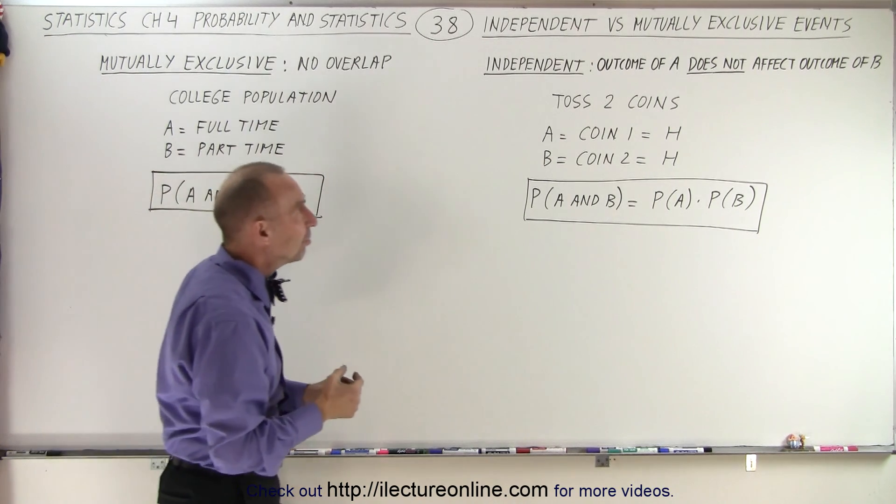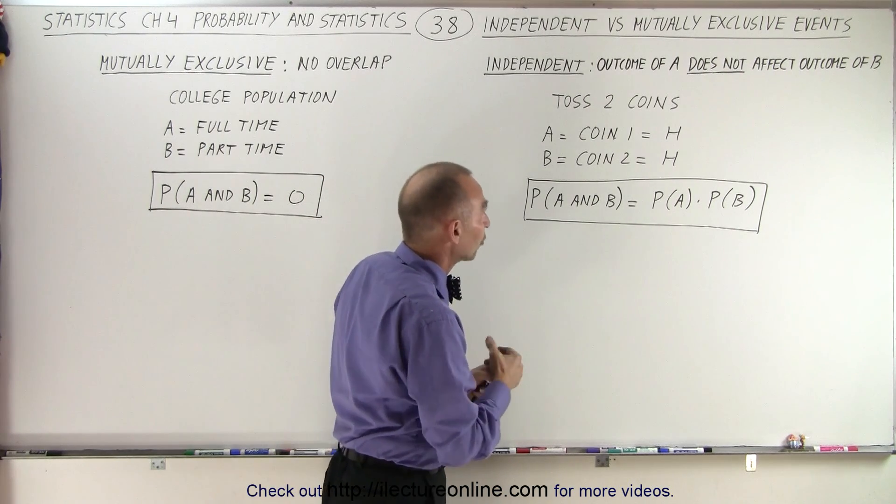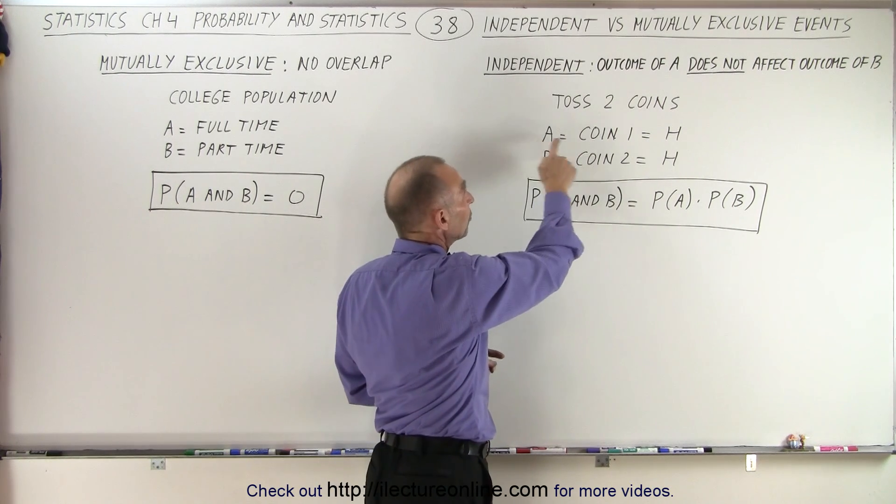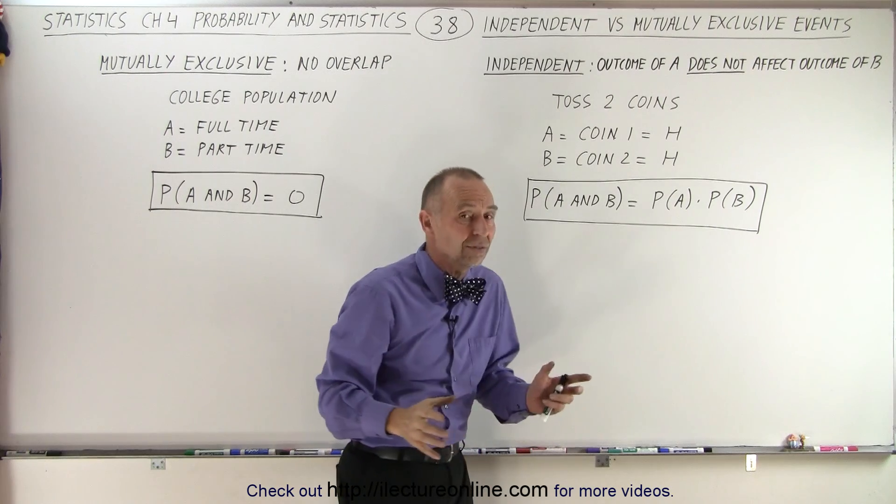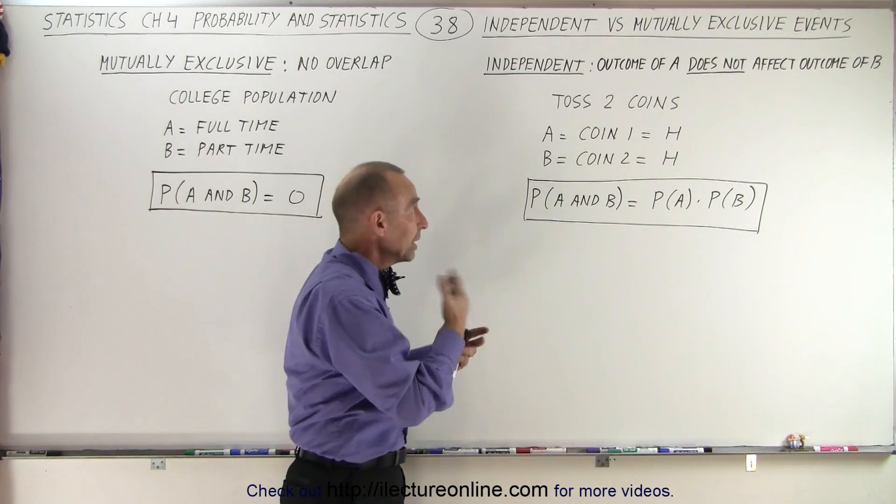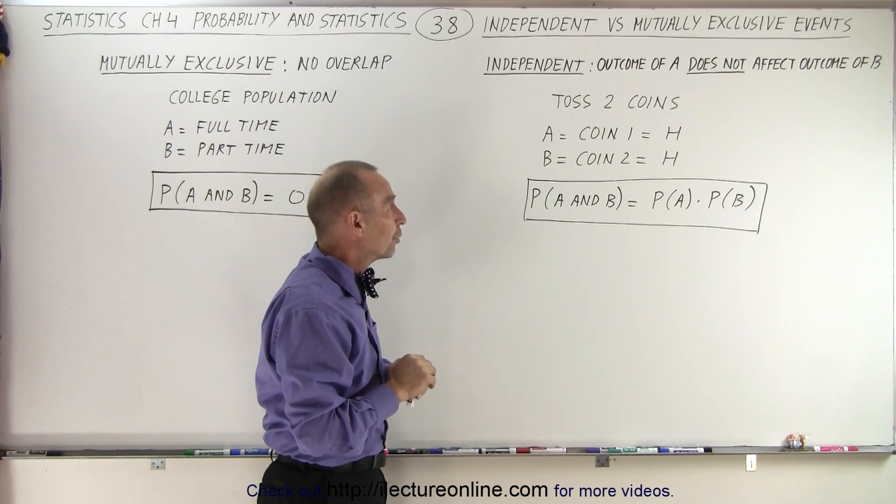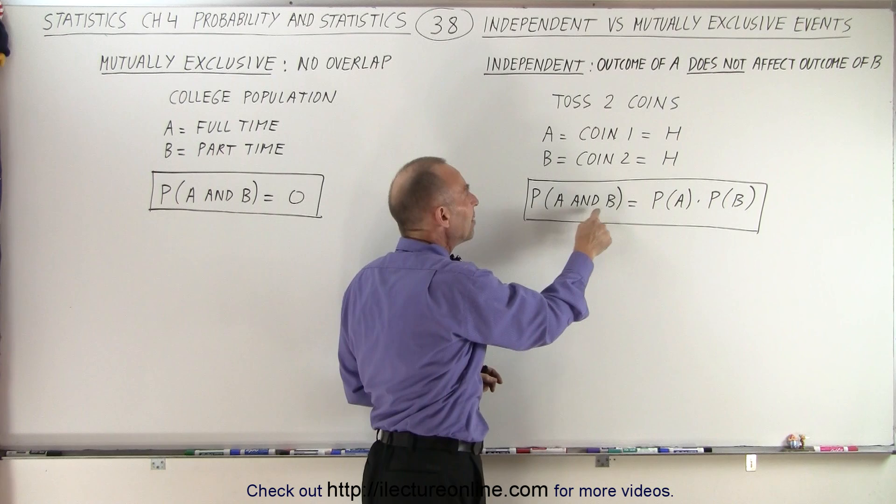With independent events, the outcome of one does not affect the outcome of the other. Let's say we toss two coins and event A is coin 1 is heads, B is coin 2 is heads. It doesn't matter if coin A is heads or tails, it will not affect the results of coin 2.